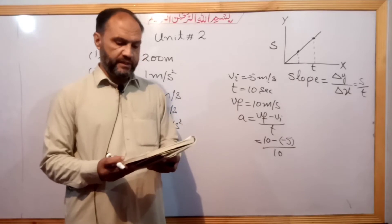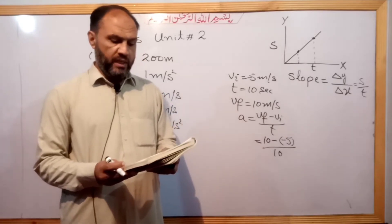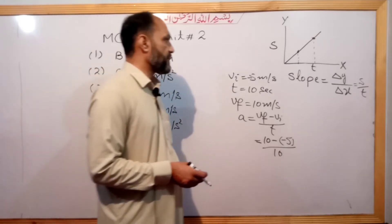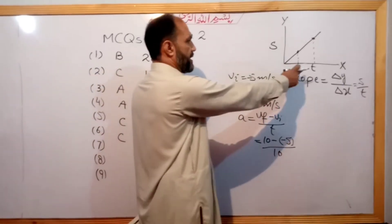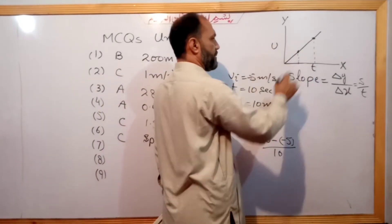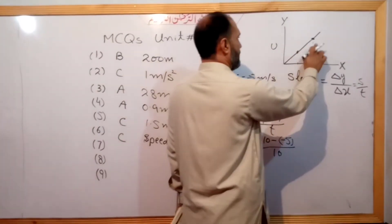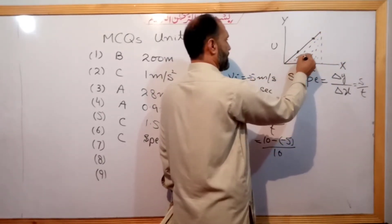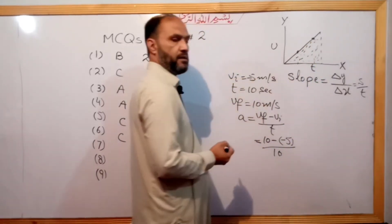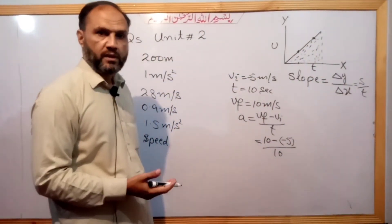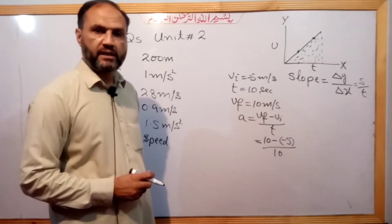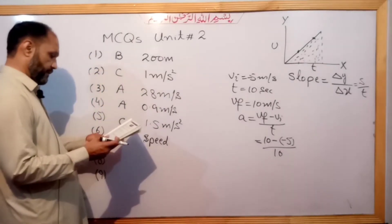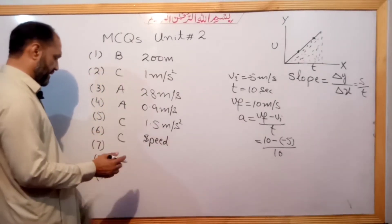Question number 7. The area under a speed-time graph represents what? The area under a speed-time graph is equal to the distance traveled. So the area equals distance traveled.